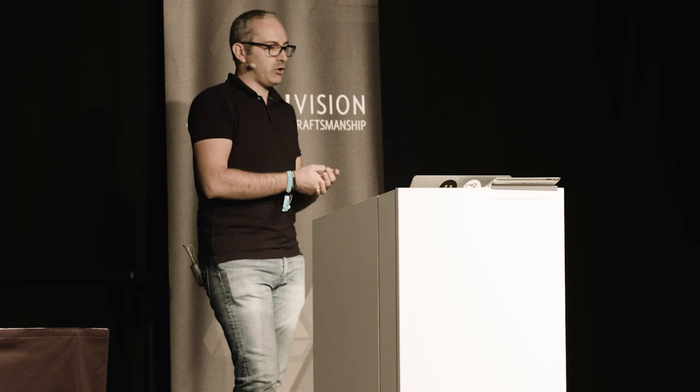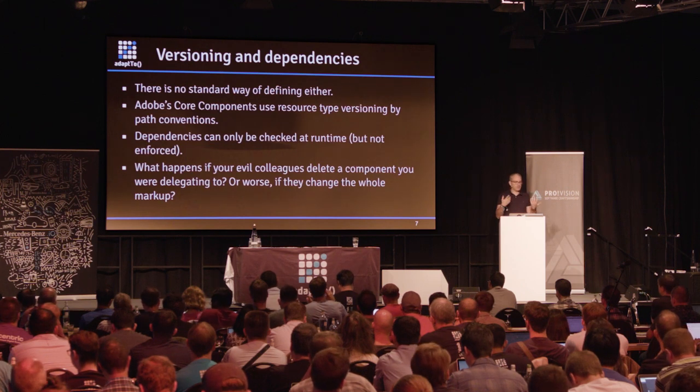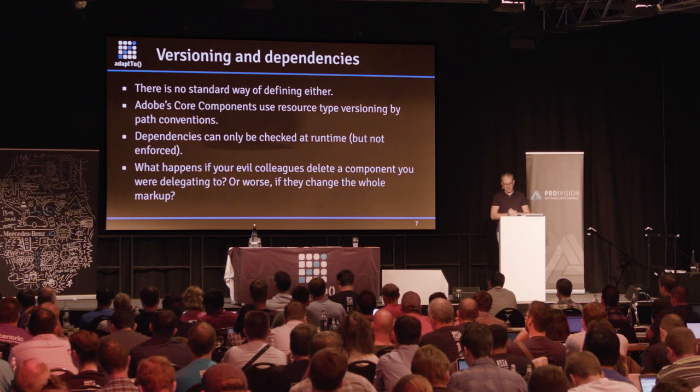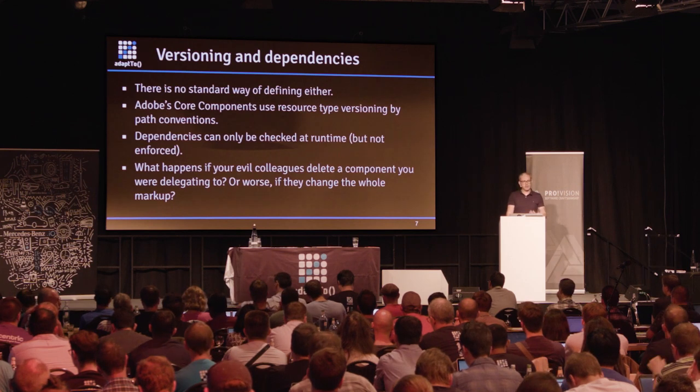Those dependencies can only be checked at runtime. So if you delegate to one of the core components or want to extend it, you can only figure out if your code will work correctly at runtime. There's no way to check upfront from the moment you start writing your custom component. And what happens if somebody deletes a component you're delegating to, or starts changing the markup? There's no way to protect yourself against it at build time.